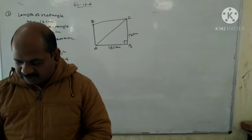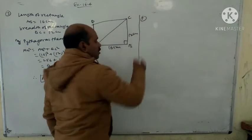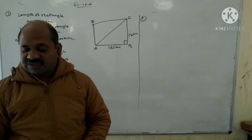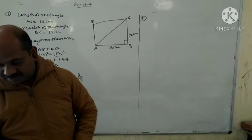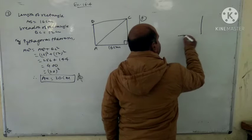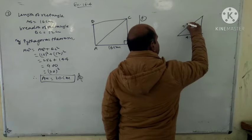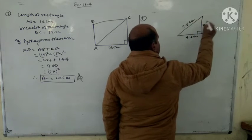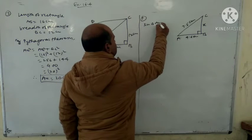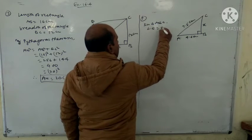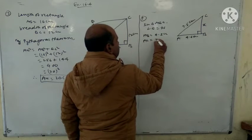Question number 7: The length of one side of a right triangle is 4.5 centimeter and the length of its hypotenuse is 7.5 centimeter. Find the other side. AB is given as 4.5 centimeter and the hypotenuse AC is given as 7.5 centimeter.